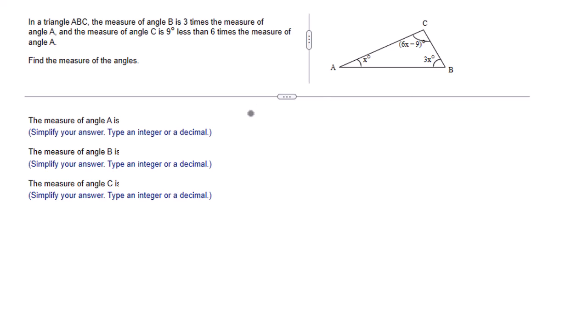Hopefully you remember that the interior angles of a triangle add up to 180 degrees. So all we have to do is just add the angles. We'll have X plus six X minus nine plus three X, and that equals 180 degrees.